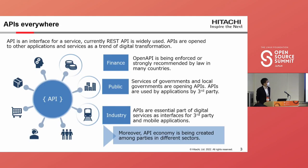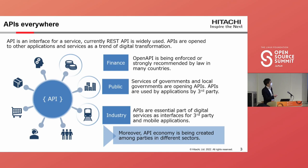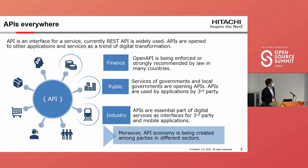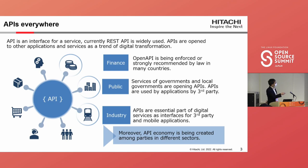This slide shows what an API is. API is an interface for digital services, usually a REST API. APIs are opened in various sectors. For example, in the financial sector, open API is being enforced or strongly recommended by law in many regions. In public sectors, governments are opening APIs to many third parties. In industry sectors, API is now an essential part of digital transformation.